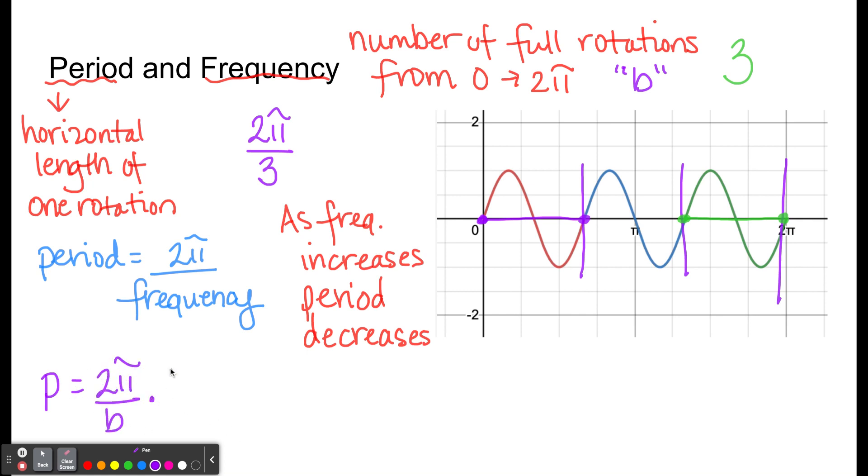I could multiply both sides of the equation here by b, since b over b makes 1. So I could say p times b equals 2π. And then if I wanted to solve for b, I could divide both sides by p.